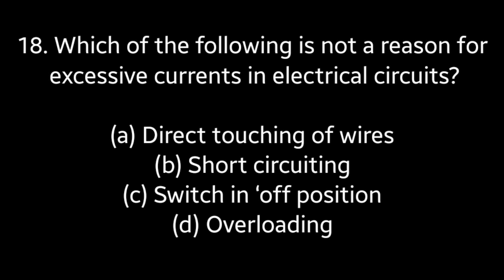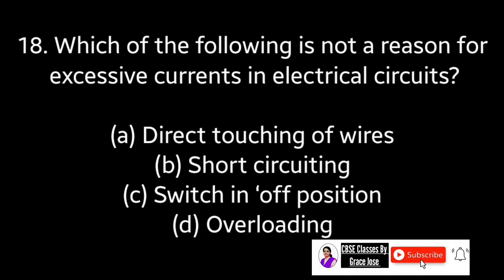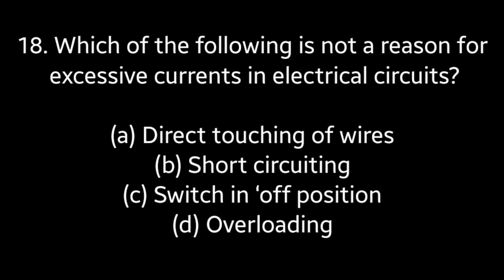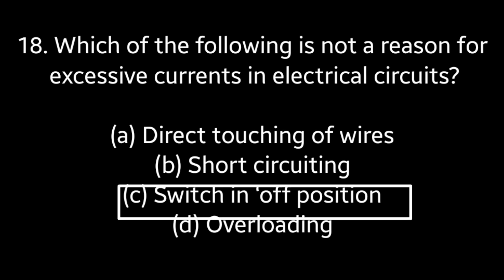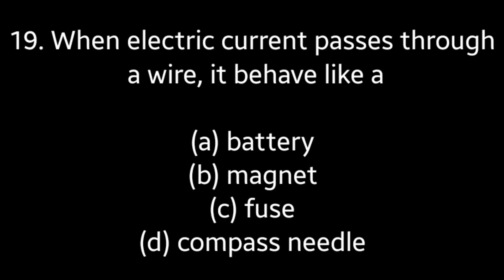Question No. 18: Which of the following is not a reason for excessive currents in electric circuits? — Direct touching of wires, Short circuiting, Switching off position, Overloading. Answer is Option C: Switching off position.